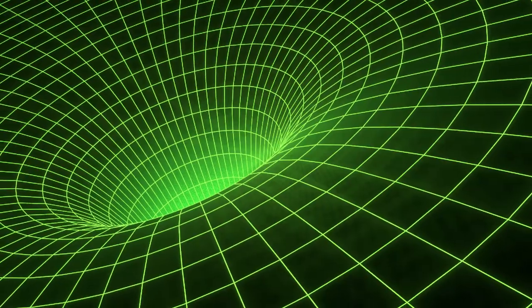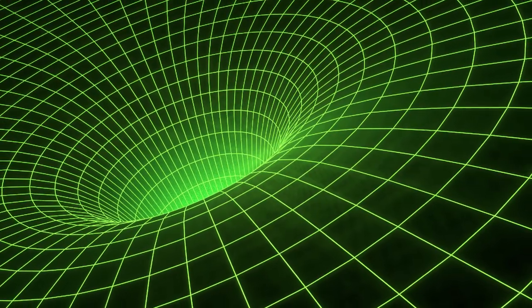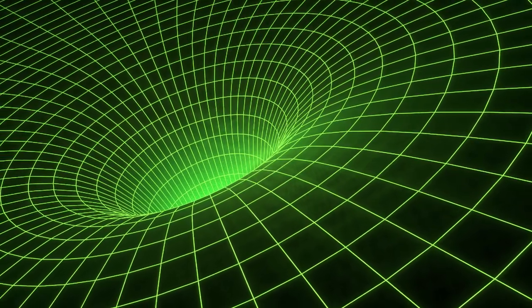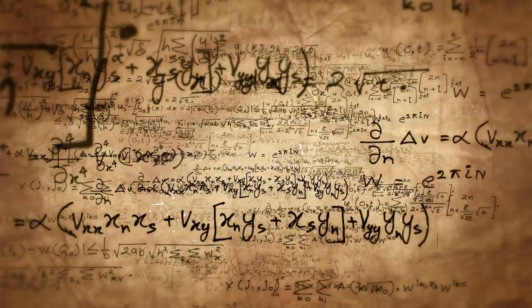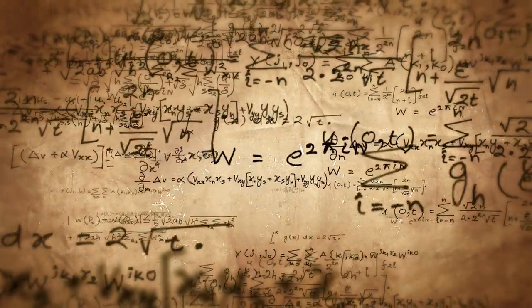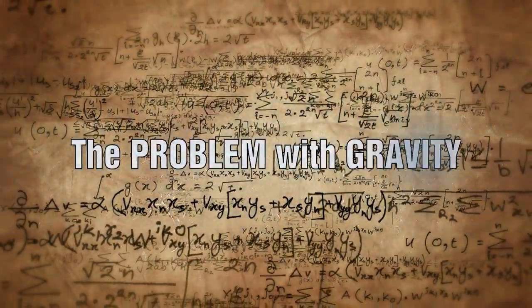We are taught at school the basics of Newton's laws and the main concepts of Einstein's theory of general relativity. What we are not taught is that Newton himself questioned the very nature of gravity, and that there are fundamental problems with our basic assumptions of general relativity and the concepts of gravity.